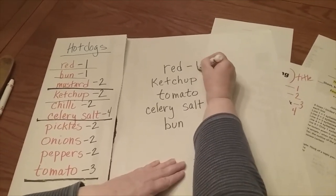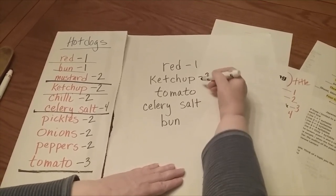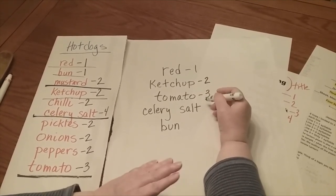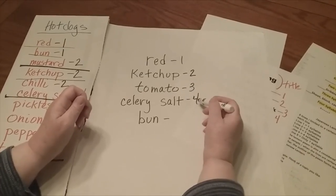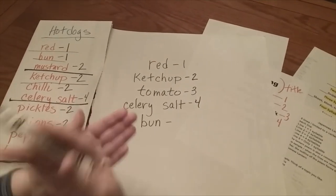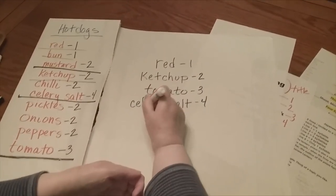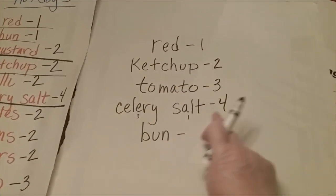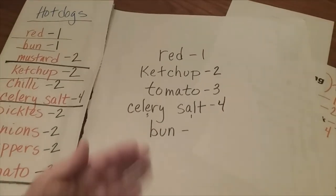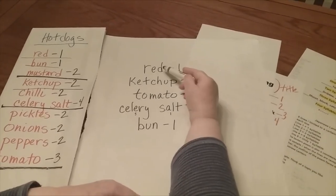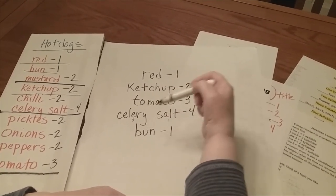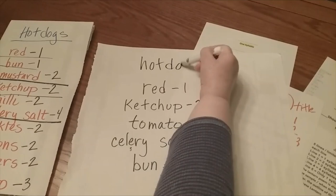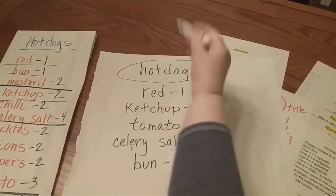Red — one. Ketchup — two. Tomato — three. Celery salt — four. Let's repeat celery salt because that was a hard one. Celery: there's three. Salt: that's one. Remember, three plus one is four. And the last one, bun, is one. Red, ketchup, tomato, celery salt, bun. And you can ask someone what this is all about — it's about hot dogs. There's my title for it, and it's a Japanese lantern poem.